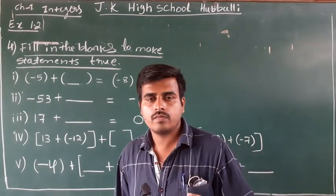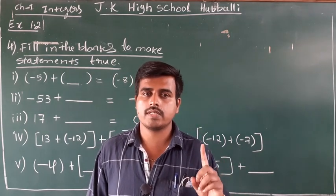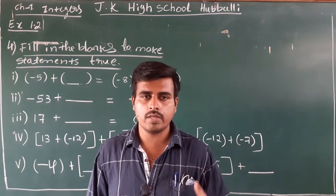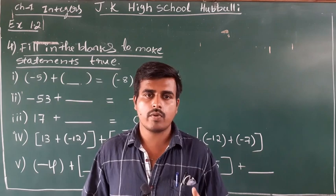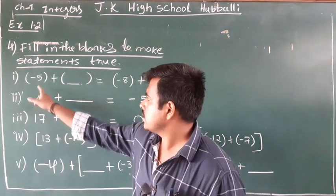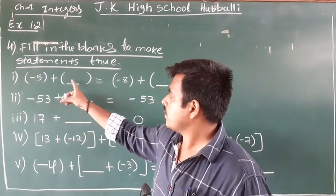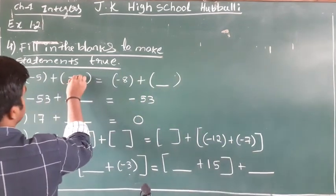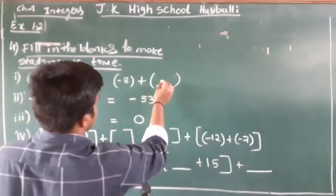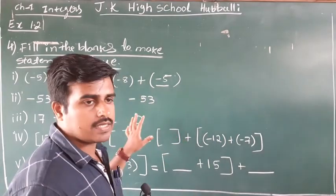By looking at the first question, which property does it represent? It represents the commutative property of addition. The commutative property of addition of integers says that a plus b is equal to b plus a — if we change the operands while keeping the operation the same, the result will not change. From this, I got a and b: therefore minus five plus minus eight equals minus eight plus minus five.